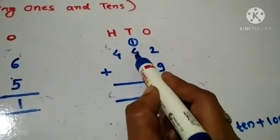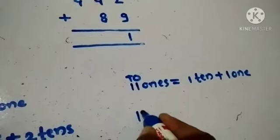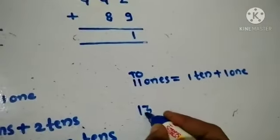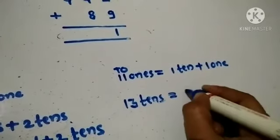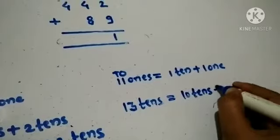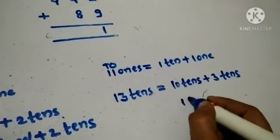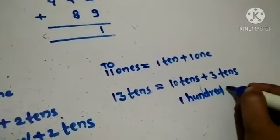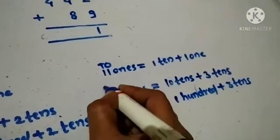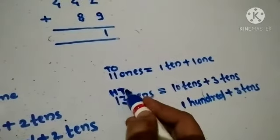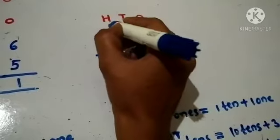Now add the 10's: 1 plus 4 is equal to 5, and 5 plus 8 is equal to 13 — that's 13 10's. 13 10's means 10 10's plus 3 10's. 10 10's is equal to 100, so we have 1 hundred and 3 10's. Write 3 in the 10's column and carry forward 1 hundred to the 100's column.